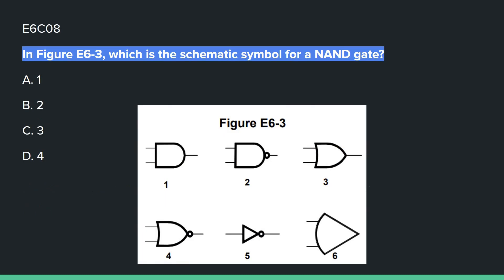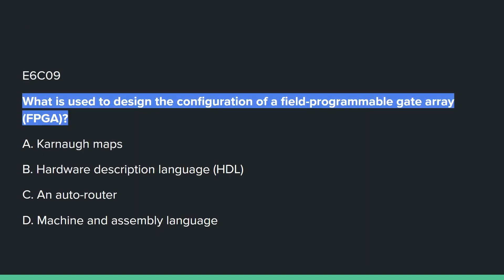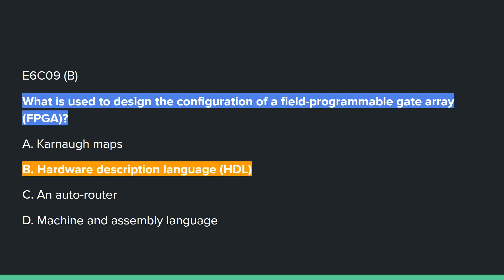E6C08: In figure E6-3, which is the schematic symbol for a NAND gate? The correct answer is B, which is number 2. E6C09: What is used to design the configuration of a field programmable gate array, also known as FPGA? That would be B, hardware description language, HDL.